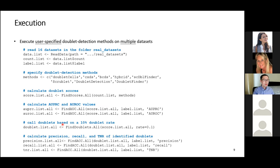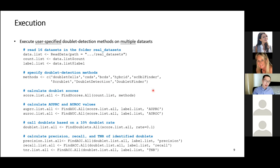The next functionality is to execute user-specified doublet detection methods on multiple datasets. Here I show one example: you save all 16 real datasets under a folder and use a function to read all of them into a list in your R environment, specify which doublet detection methods you want to run, and then use the 'fun_scores' function to execute all specified methods on all datasets. You don't have to write a for-loop yourself — just one line of code — and then the doublet scores are saved in a list.